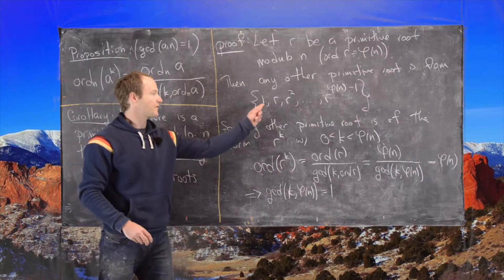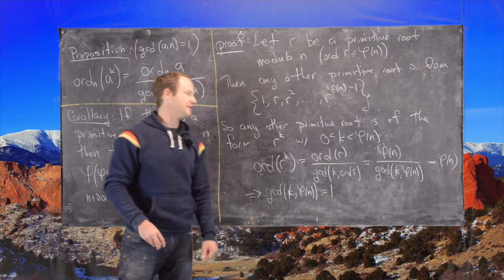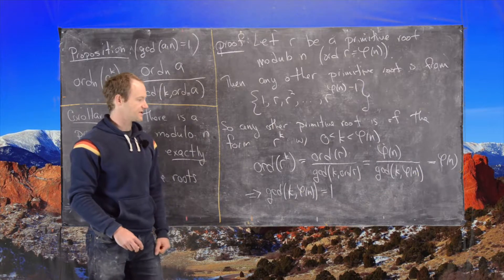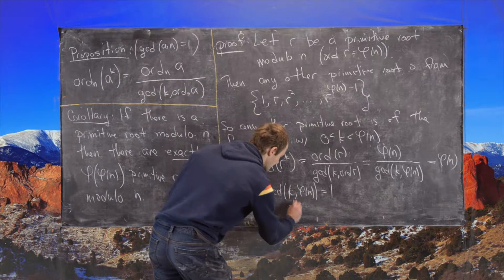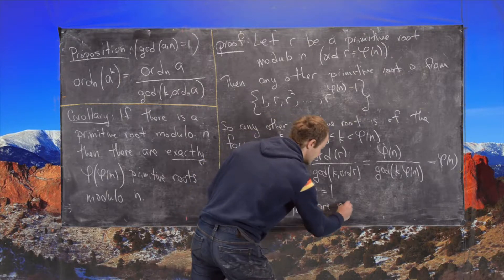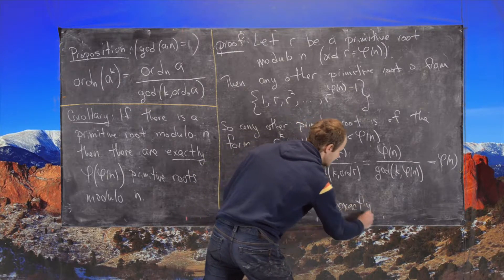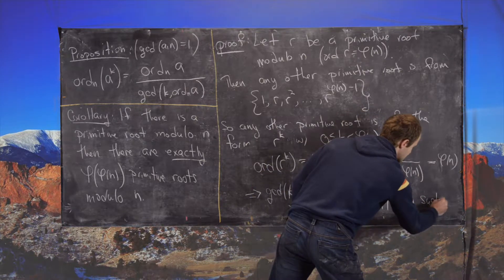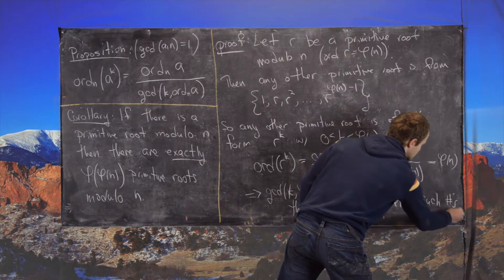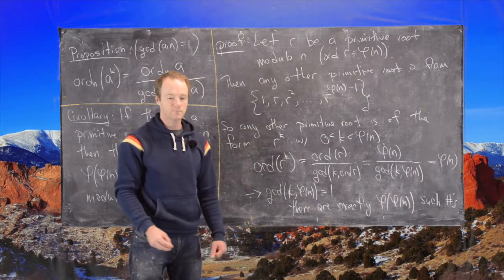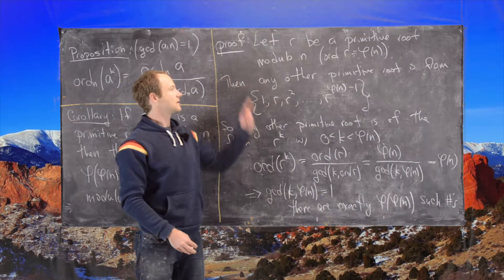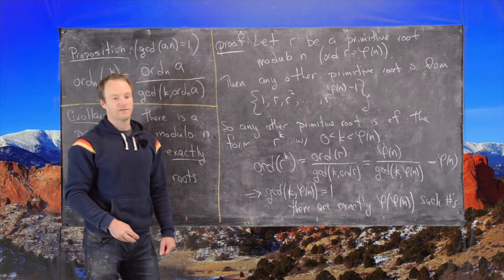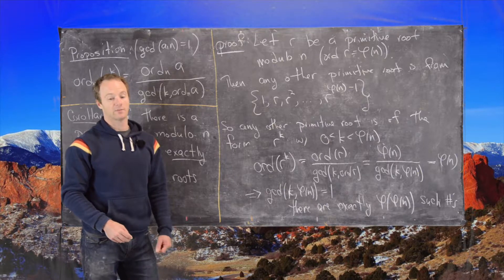From the list 1 to φ(n) − 1, there are exactly φ(φ(n)) numbers with gcd(k, φ(n)) = 1. So there are exactly φ(φ(n)) primitive roots. We'll look at a simple example now and a more complicated example in a following video.